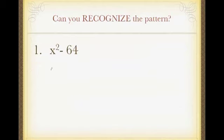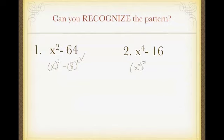So let's see if you can recognize the pattern. Here we have x squared minus 64. Well I can write that as x squared minus 8 squared. So yes, this one is a difference of squares. Here I can write x to the fourth as x squared squared minus 4 squared. So again, we have the difference of squares.